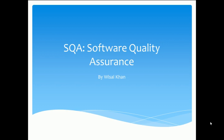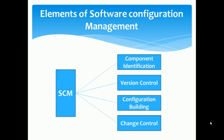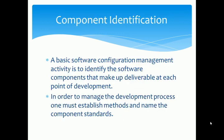Hi everyone, this is Visal Khan and today we are talking about SQA — Software Quality Assurance. Our today's objective is Elements of Software Configuration Management, SCM. These are the four elements of software configuration management: Component Identification, Version Control, Configuration Building, and Change Control. So let's see one by one.